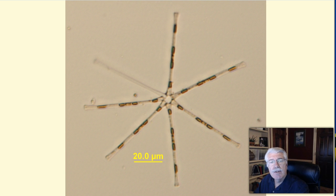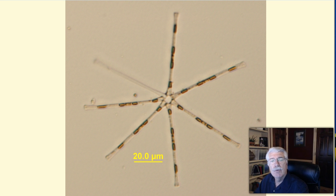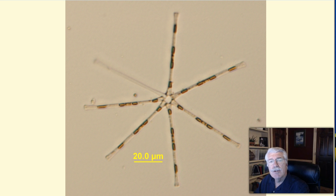Phytoplankton photosynthesize when exposed to sunlight, so they're important primary producers in the aquatic food chain. They produce organic compounds from carbon dioxide dissolved in the water. They also produce oxygen that can remain either dissolved in the water or can rise into the atmosphere.